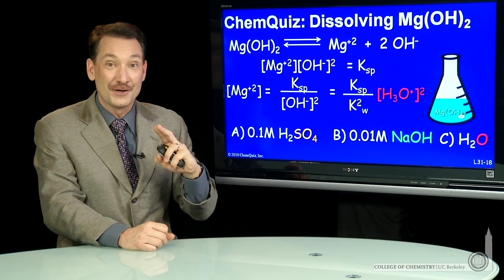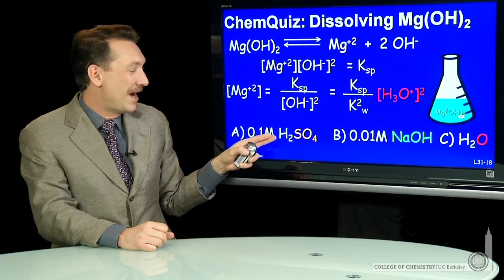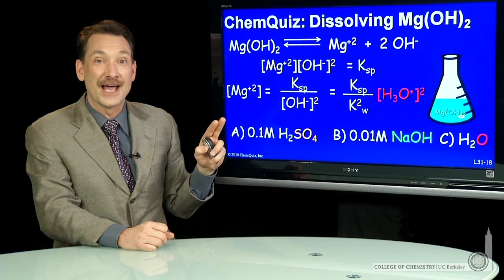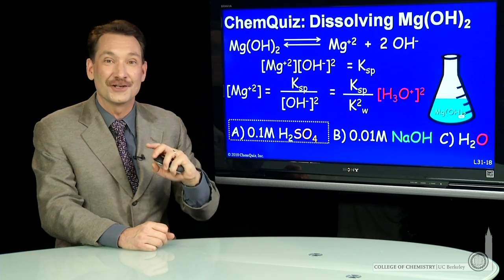So a quadratic increase in my magnesium ion concentration by adding strong acid. In this case, the best answer is A.